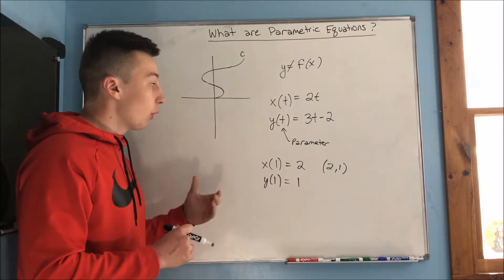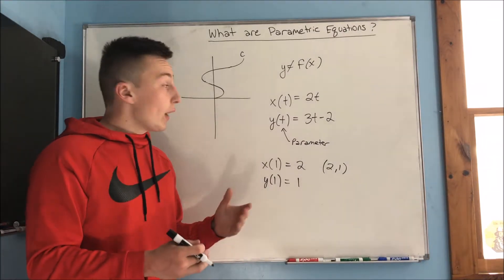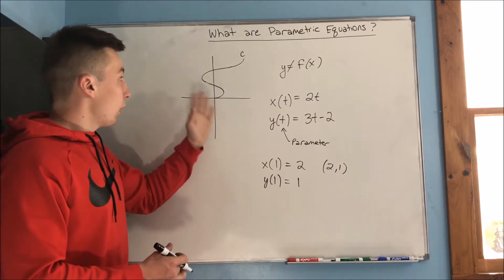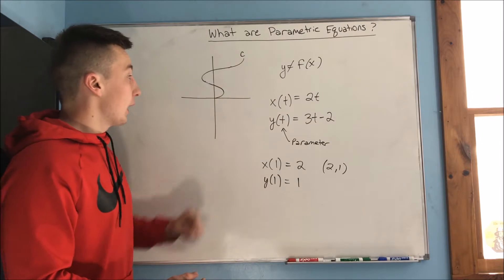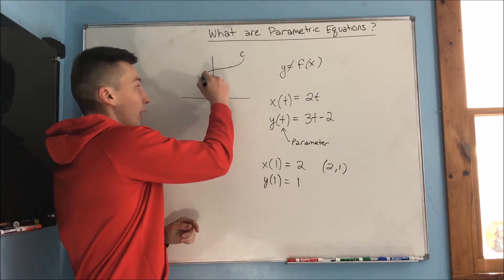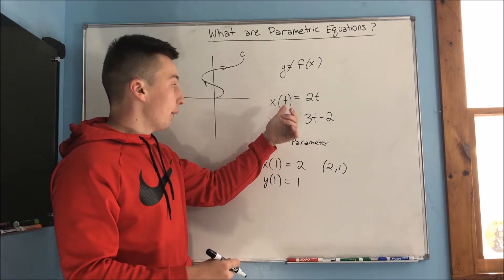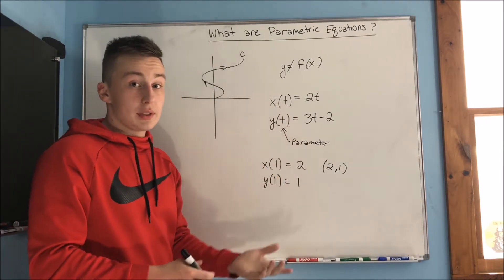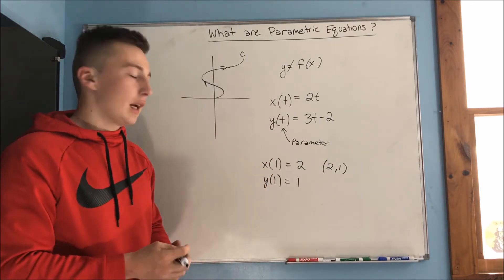So one last thing that I should mention: since time only goes in one direction, we actually have to give this curve a direction. We need to show where it's going as time increases. So let's say it was going up as time increases, we would draw an arrow. And you could just test that - you can try time as 1, time as 2 - where did it go? Did it go down the curve or up the curve?